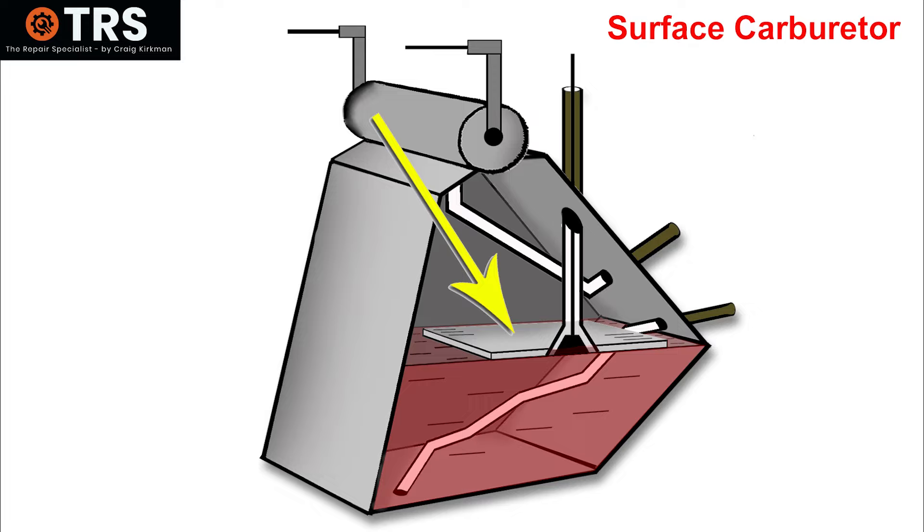This was not a float, like what we see in carburetors today, but this plate did stay on the surface of the fuel. And in some variations of the surface carburetor, this plate was self-adjustable with the level of the fuel, so it always remained on top.